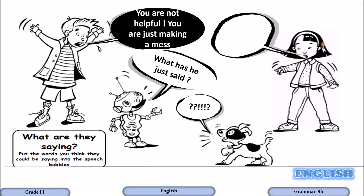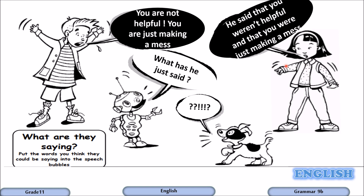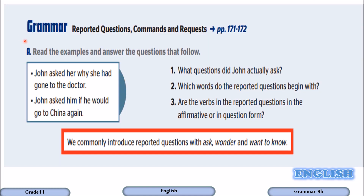So what do you think the girl said when she reports the boy's speech? He said that you weren't helpful and that you were just making a mess. 'You are not' in the present becomes 'weren't', and 'you are just making', which is present progressive, becomes past progressive 'were just making'. Now let's do Activity A on your student book page 136.